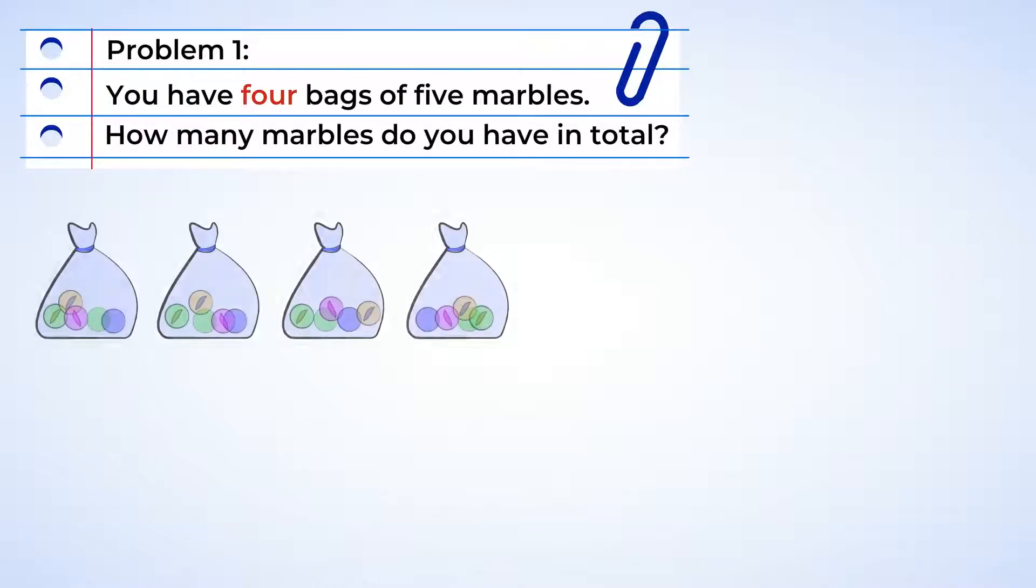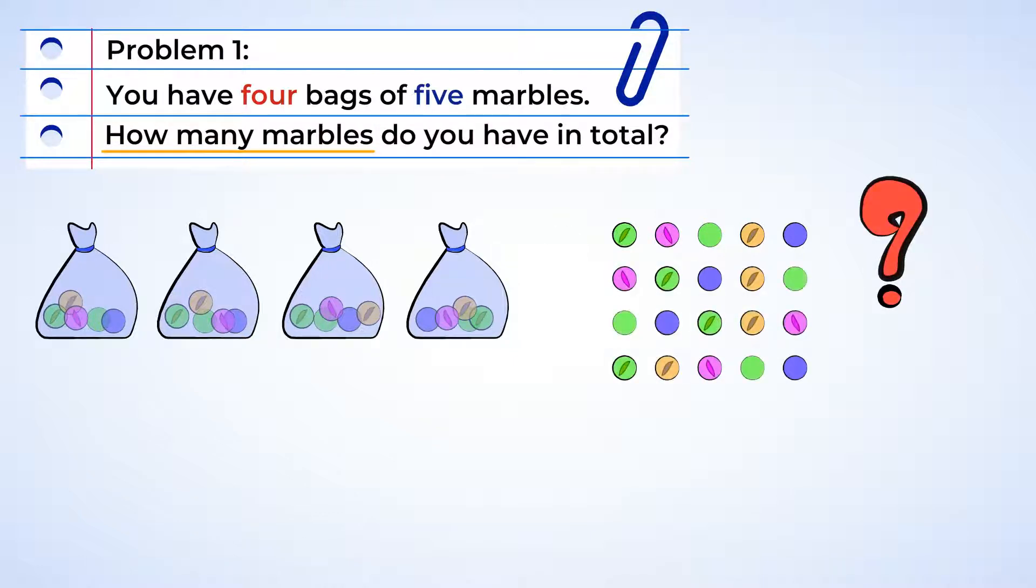You have 4 bags of 5 marbles. How many marbles do you have in total? Let's create an array. You would have 4 groups, or rows. Each row would have 5 marbles. Now multiply 4 times 5.